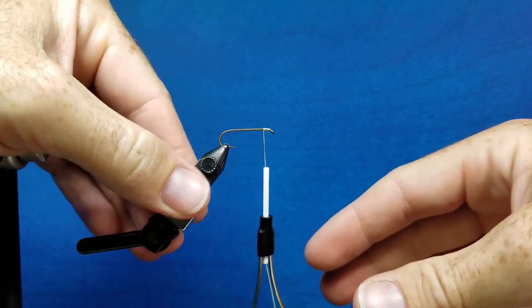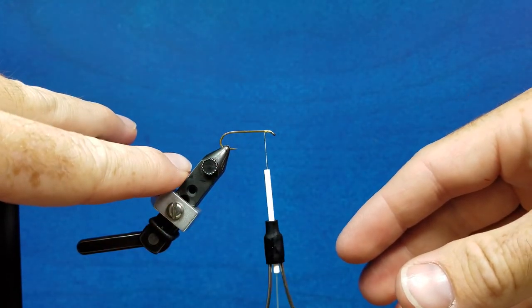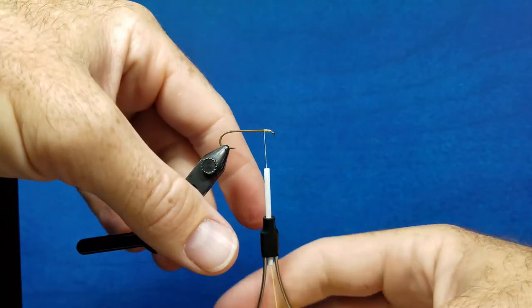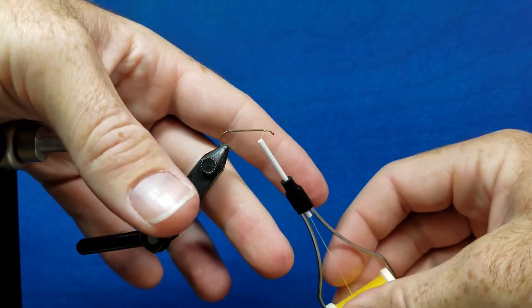Obviously we have the vise, which we've talked about a little bit, whether that's a stationary vise or a rotary vise. That's more of a preference. A good bobbin in my opinion is crucial.